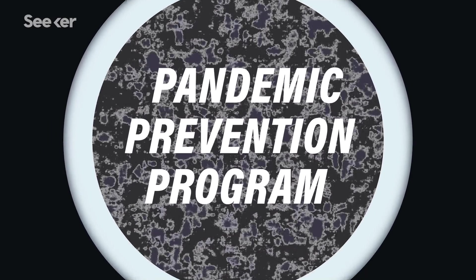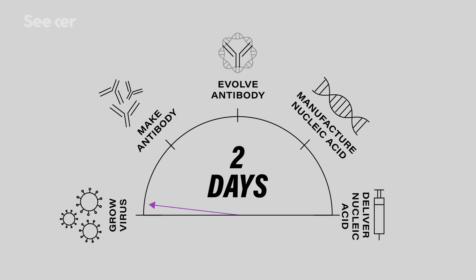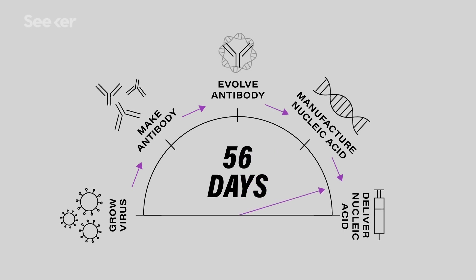So the Pandemic Prevention Program or P3, the idea was an epidemic occurs and in 60 days groups would take blood samples and be ready to treat people 60 days later. Normally drug programs take a decade or certainly years, so it was a crazy idea.